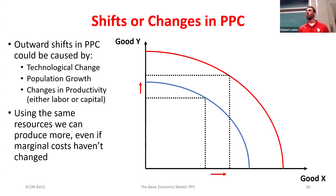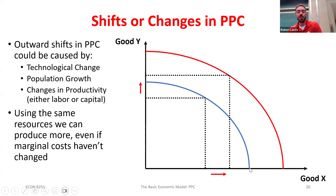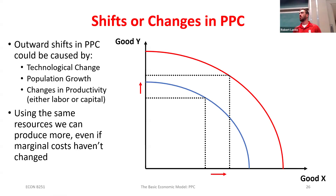If I have more people or a technology change that impacts both goods the same, then if I'm only producing one good I can now get more of it, and likewise for the other good — and any combination in between. Points that used to be unattainable no longer are. Even on the new PPC, every point is production efficient but there's still only going to be one allocatively efficient point.